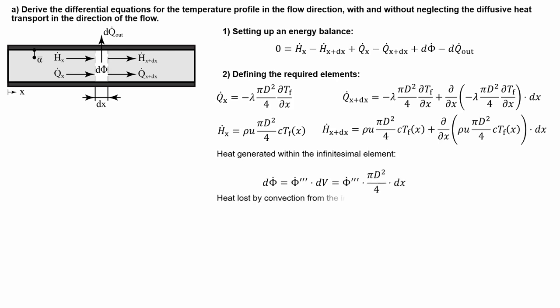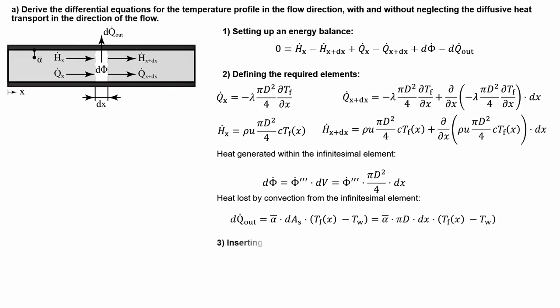Then the last term to define is the heat loss by convection. This can be written by use of Newton's law of cooling, which states that the heat loss equals the heat transfer coefficient times the surface area times some relevant temperature difference. Our relevant temperature difference in this case is the temperature difference between the fluid and the pipe wall. For our infinitesimal element, the surface area yields from the perimeter, which is d times pi, multiplied by the height of the cylinder dx.